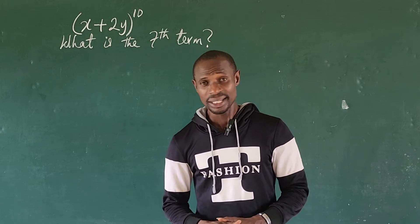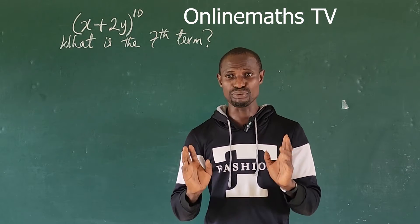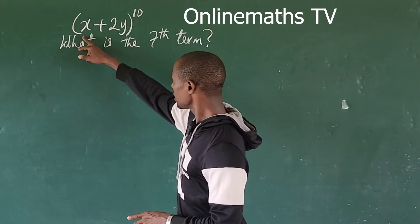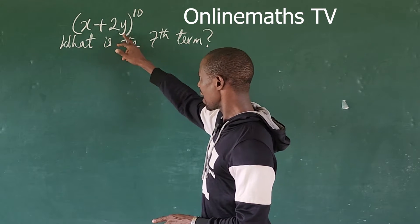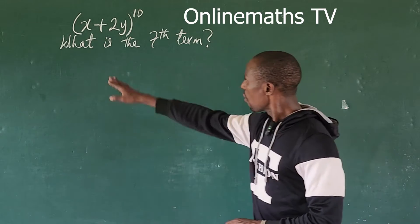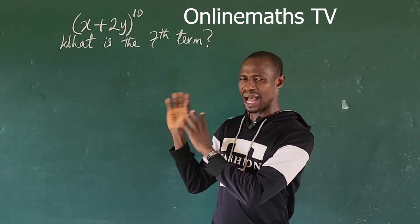Alright, welcome to this class. Today we have a very nice math challenge, a very nice math problem on the board. The question before us is (x + 2y)^10. What is the seventh term in this expansion?